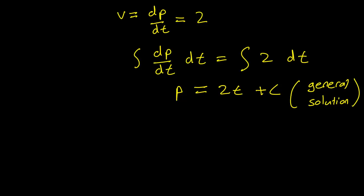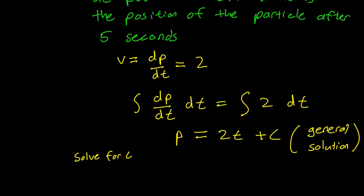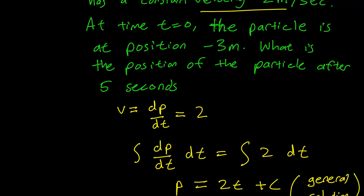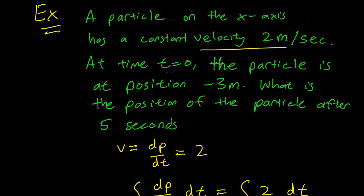Now we want to find a specific solution. That is, we want to solve for c, and we do that using information from the problem. We know that at time t equals 0, our particle has position minus 3.